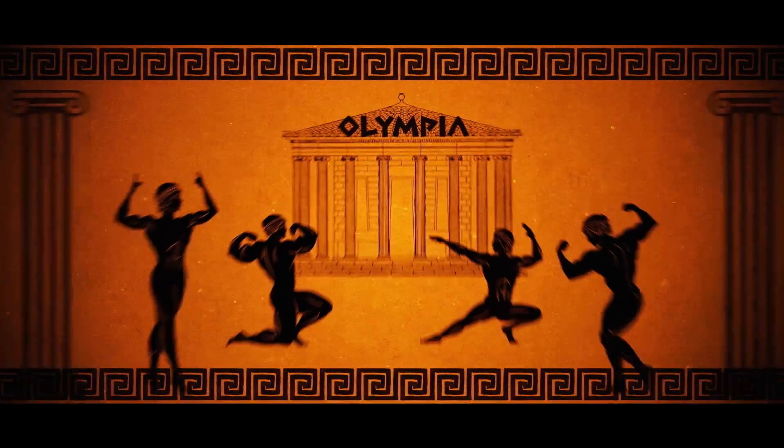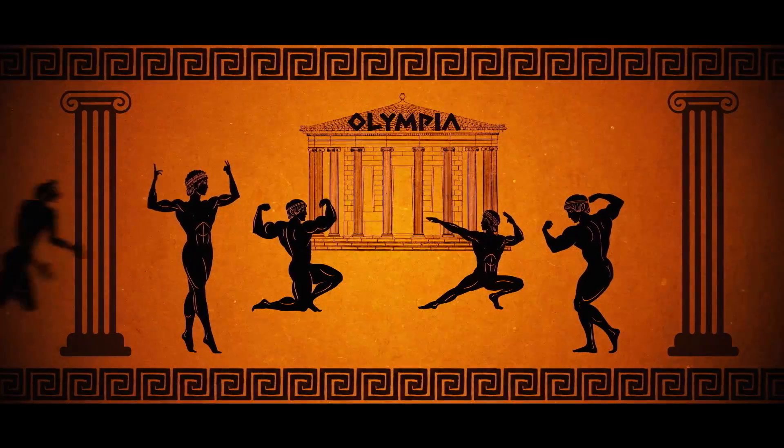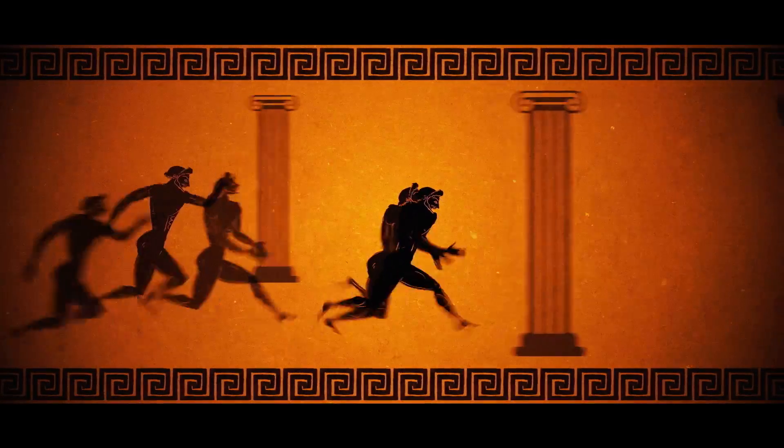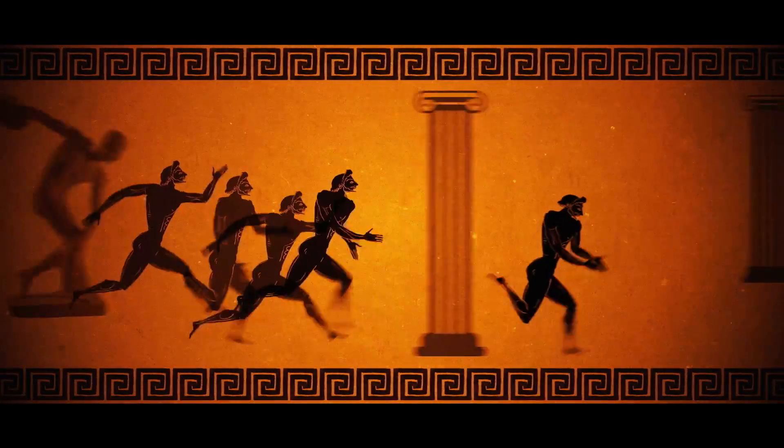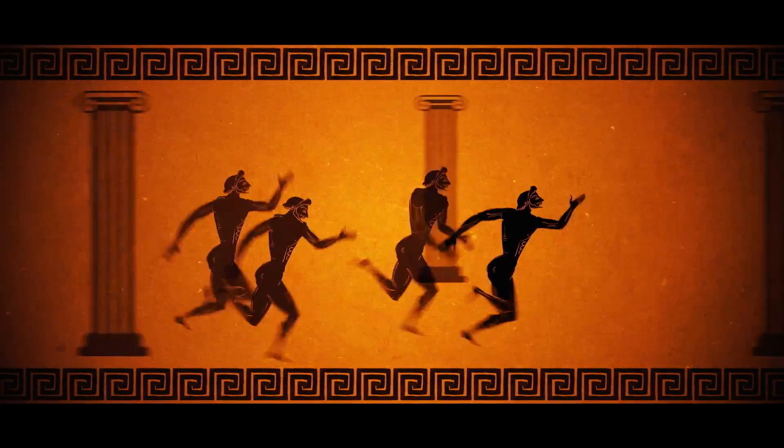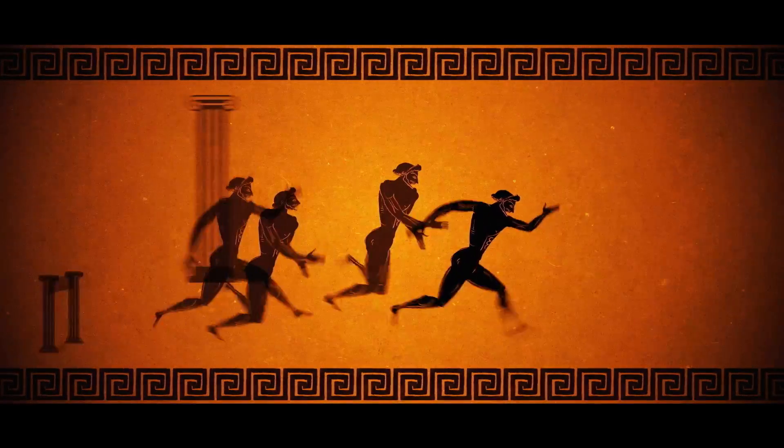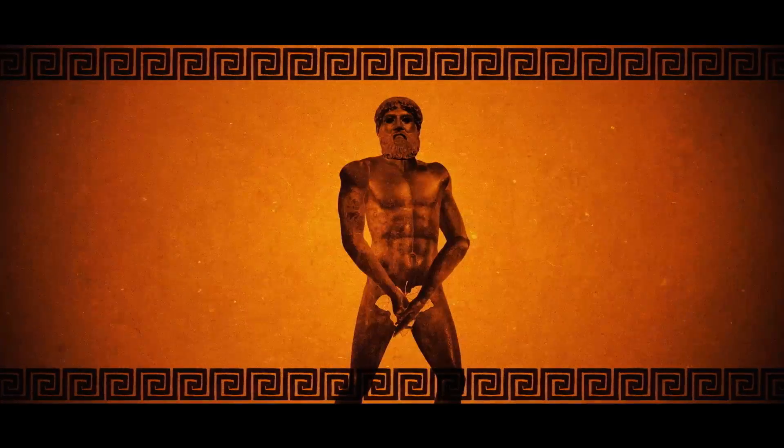The first known celebration of sports, the Olympics, were held at Olympia, a site in southern Greece in the summer of 776 BC. But unlike today's games, it was men only, and they did so naked, no kit.